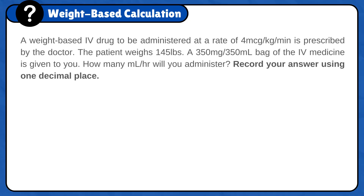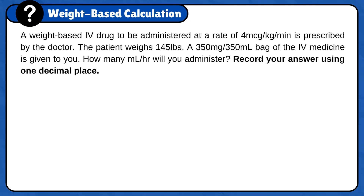A weight-based IV drug to be administered at a rate of 4 micrograms per kilogram per minute is prescribed by the doctor. The patient weighs 145 pounds. A 350 mg per 350 ml bag of the IV medicine is given to you. How many ml per hour will you administer? Record your answer using one decimal place.